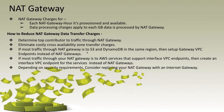You can attach your NAT gateway to your public subnet in your VPC and update your route so that all internet traffic will route through the NAT gateway. That way you can connect to the internet through the NAT gateway and update your patches, or connect to AWS services like S3 or DynamoDB. NAT gateway also prevents the internet from initiating connections with instances in the private subnet.